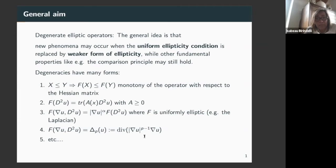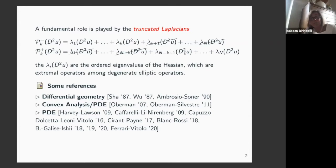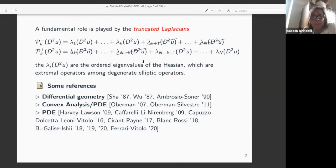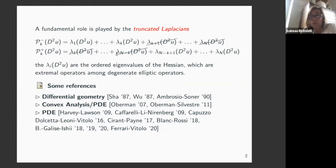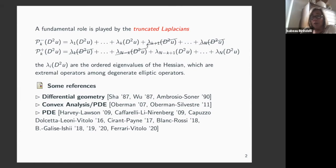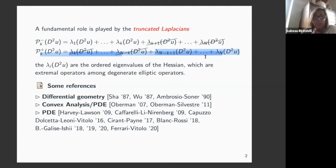Let me concentrate on some that are somehow extremal in this sense — those we've been calling truncated Laplacians. As you know, the Laplacian can be defined as the sum of the eigenvalues of the Hessian. If you order these eigenvalues, then instead of taking all of them, you can choose to take just some. One possibility is to take the k smallest or k largest eigenvalues. These operators are interesting for many reasons, and they come out in many contexts.